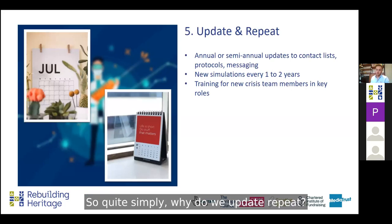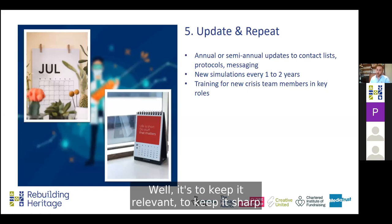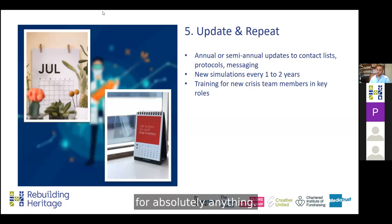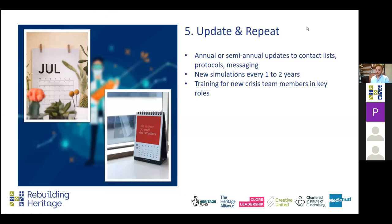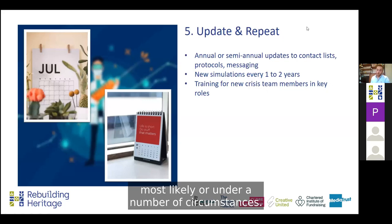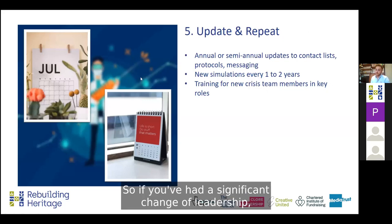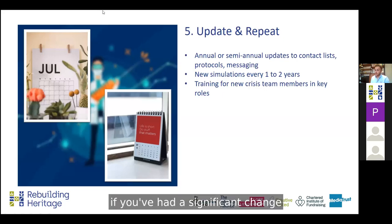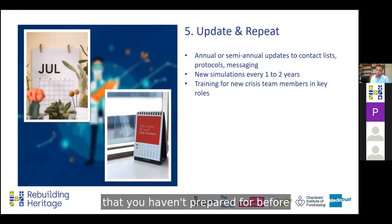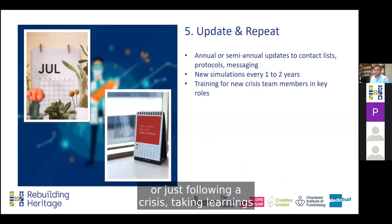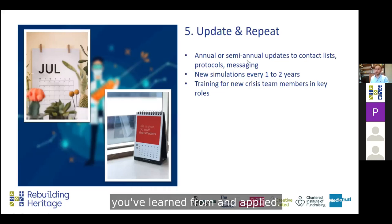And then update and repeat. Why do we update and repeat? To keep it relevant, to keep it sharp — the same as you would train for absolutely anything. When might you do it? Every one to two years most likely, or under a number of circumstances: if you've had a significant change of leadership, a significant change in the person responsible for comms and PR, potentially if there's been another significant issue you hadn't prepared for before, or just following a crisis — taking learnings and making sure that anything that didn't work well the first time, you've learned from and applied.